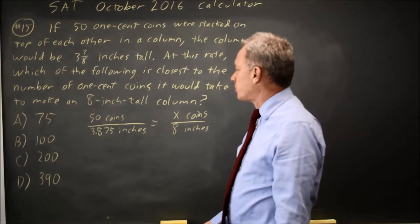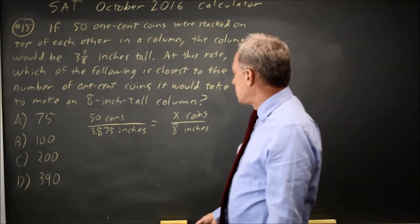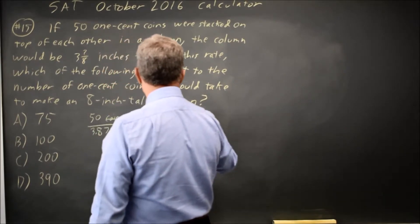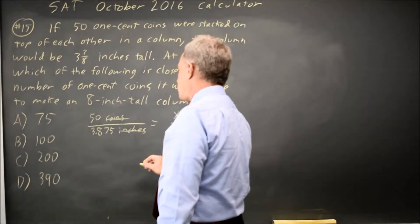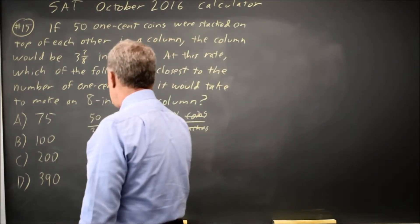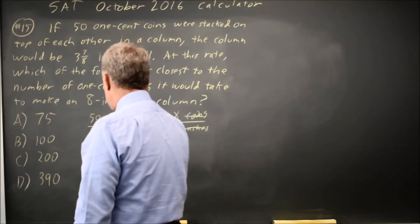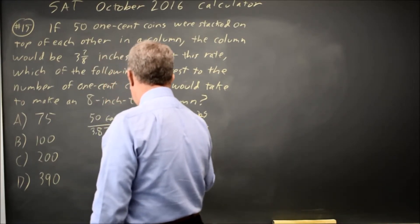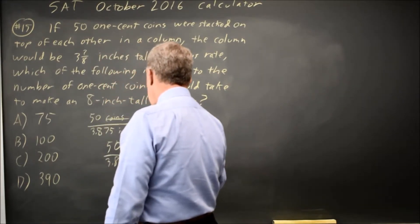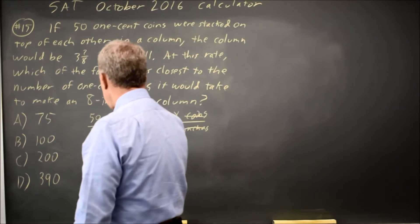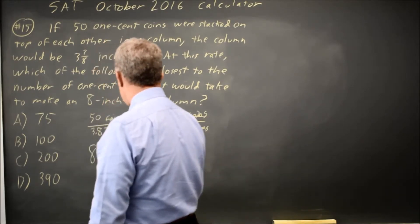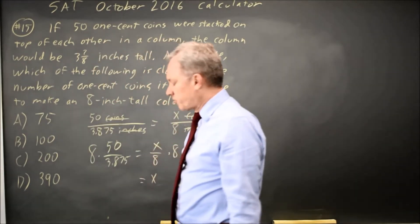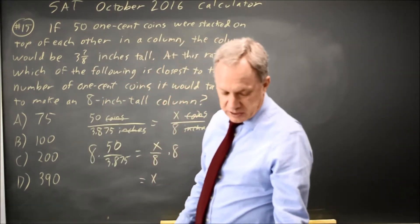A common error is to just flip one of them. Now if I ignore the units, I have 50 over 3.875 equals x over 8. Multiplying both sides by 8 gives x by itself, so x equals 8 times 50 over 3.875.